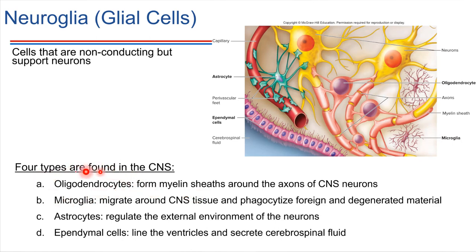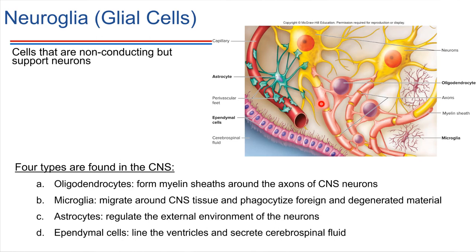Oligodendrocytes are the types of neuroglia that provide the myelin sheaths on the axons. If you come up to the picture up here in yellow, this is a neuron, and here is another neuron. These each have an axon — here's the long axon. And notice those axons are wrapped in this pink stuff, which is called the myelin sheath.